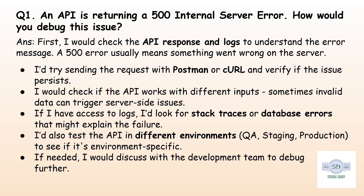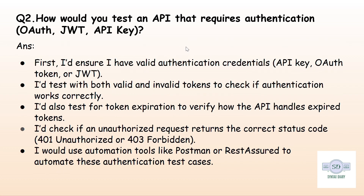And if you still can't figure it out, talk to the backend team — they might find an issue in the database or code. Our second question is: how to test an API that requires authentication? Some APIs need authentication like an API key, OAuth token, or JWT token. To test them, first use valid and invalid tokens to see how the API behaves. Second, check for the correct status codes like 401 Unauthorized or 403 Forbidden. Third, try using expired tokens and see if the API refreshes them properly.